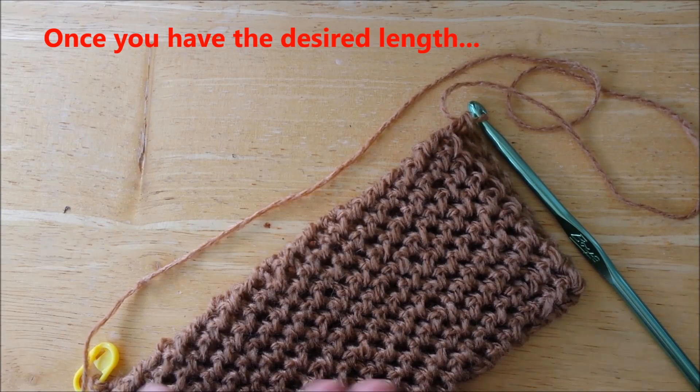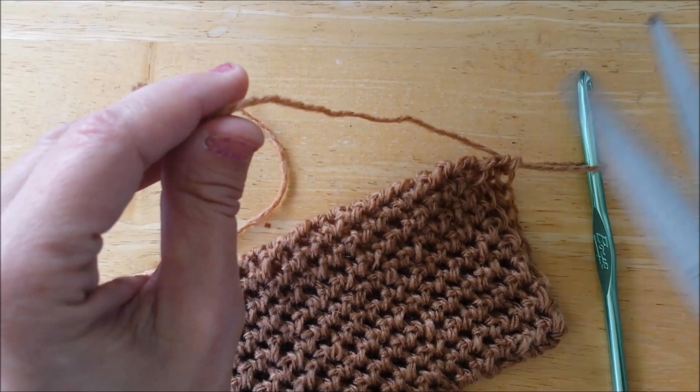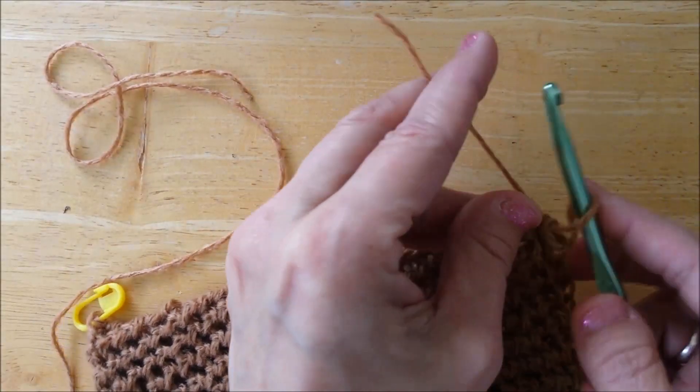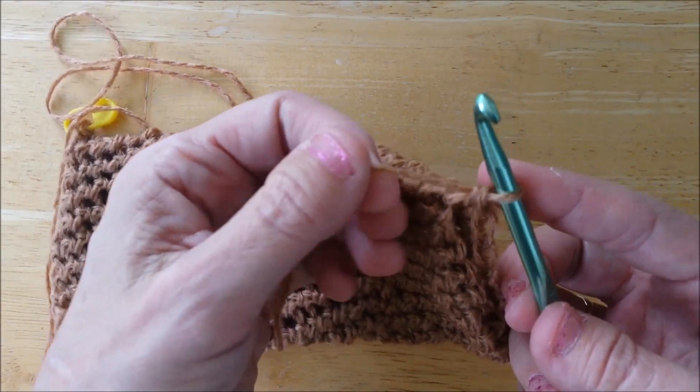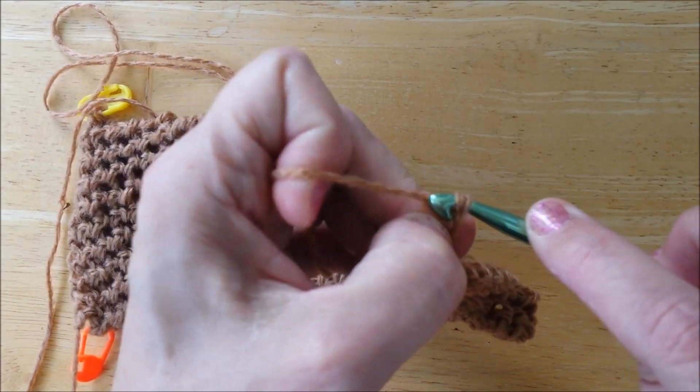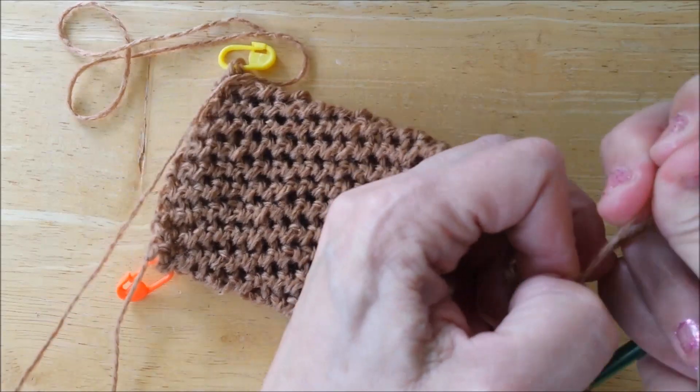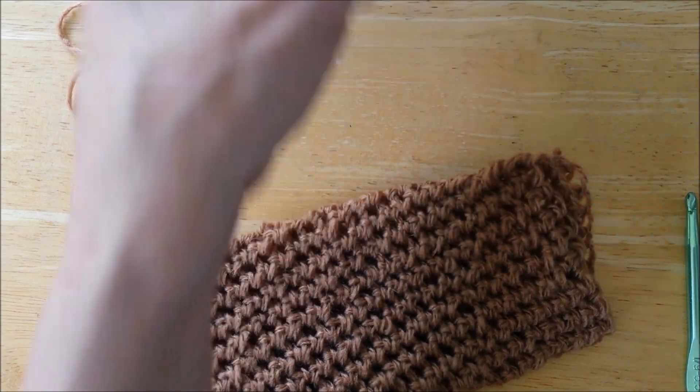Once your item's the appropriate length, go ahead and just leave some length, and yarn over once, and pull through, which is a little slip stitch. Pull tight. And cut.